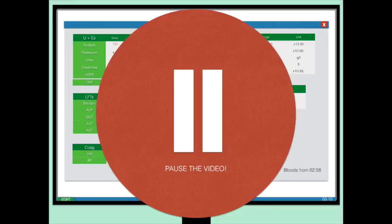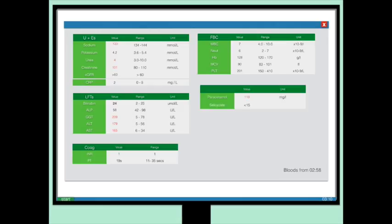So the FBC, the full blood count is unremarkable as are the U's and E's apart from a mildly lowered sodium level. Looking at the LFTs we can see that the toxic metabolite has indeed caused some liver damage with ALT and AST raised. The GGT is raised likely as a consequence of Gemma's drinking. In acute liver failure the ALT and the AST would be raised in the thousands. The liver damage has not resulted in any clotting abnormalities at this point as evidenced by a normal prothrombin time and international normalised ratio. Finally, we can see that the paracetamol level is 110 mg per litre.